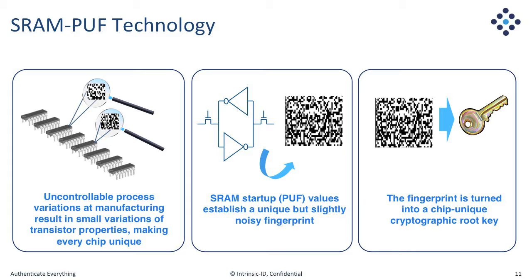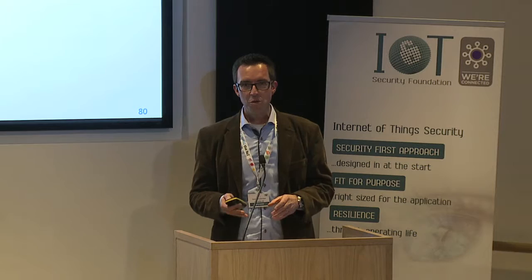This is where SRAM PUF technology comes in. Intrinsic ID uses this as our main technology for secure key storage and authentication, and we believe it has a very good proposition for key provisioning. Physical Unclonable Function technology comes from the fact that when you produce many devices — even though they're produced to be functionally the same — they will have very small differences at the nanoscale level due to uncontrolled processes at manufacturing.